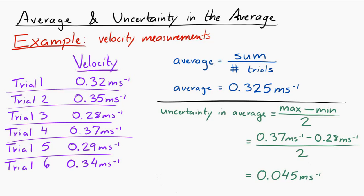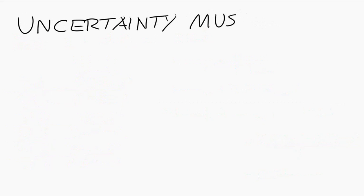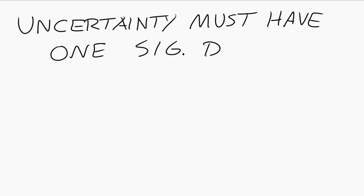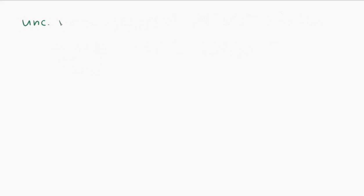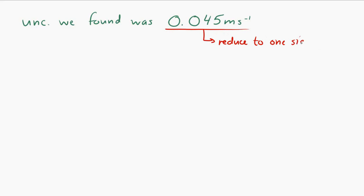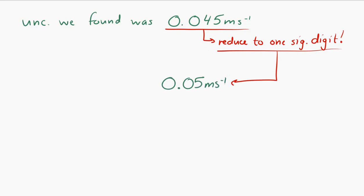However, you have to remember two cardinal rules for uncertainty. The first one is your uncertainty must have one significant digit. So this uncertainty that we have is 0.045 meters per second — that can't be. You need to take that down to one significant digit, so that becomes 0.05 meters per second. That is now your uncertainty.